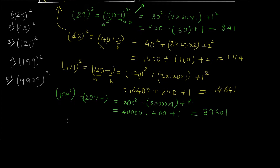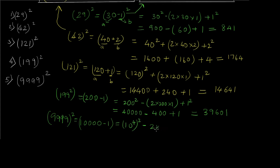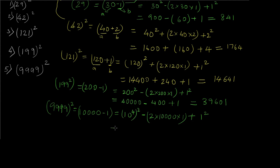The last problem is a four-digit problem. 9999² can be represented as 10000 minus 1, and the (a-b)² formula applies. That gives us (10⁴)² − 2×10000×1 + 1² = 10⁸ − 20000 + 1 = 99980001.